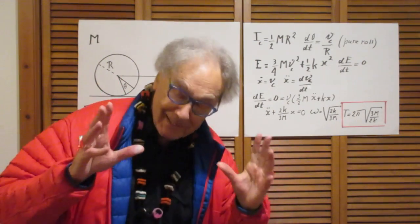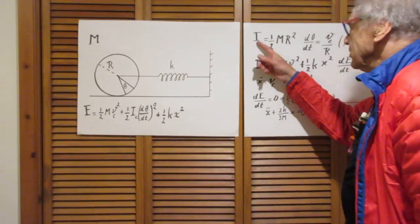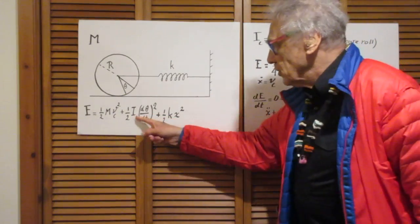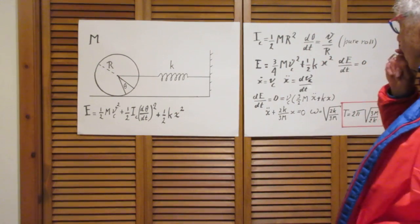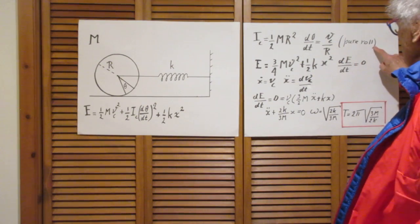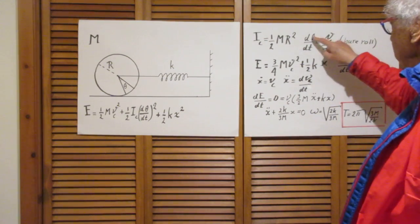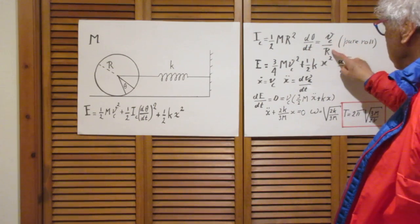Okay, let's now go to the next sheet. So the moment of inertia about the center is 1 half mr squared. Since we have pure roll, d theta dt is the speed of the center of mass divided by r.